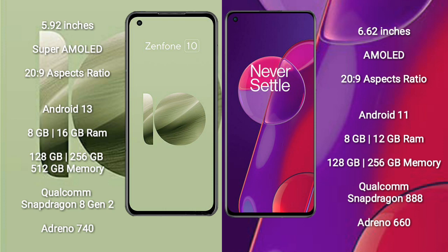The Asus Zenfone 10 runs on Android 13. It comes with 8GB or 16GB of RAM and 128GB, 256GB, or 512GB of internal storage, powered by the Qualcomm Snapdragon 8 Gen 2 processor with Adreno 740 GPU.